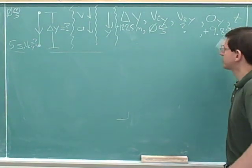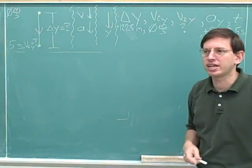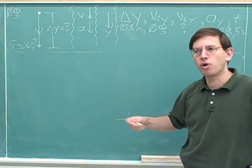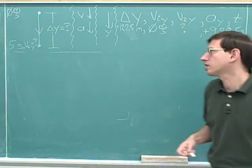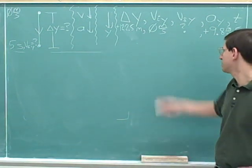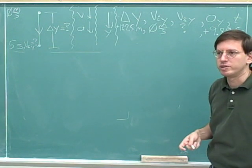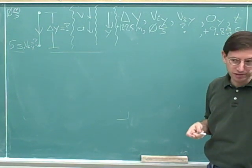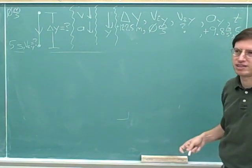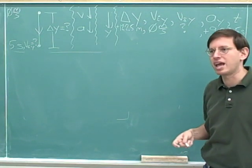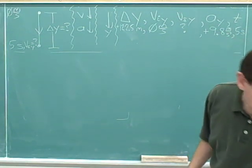Now we know 4 values. When you know 4 values, you can pick pretty much any kinematics equation you want. The only equation we can't pick is the one that is missing the final velocity — obviously, it would be unhelpful to pick that equation. But we can use any of the other four equations.